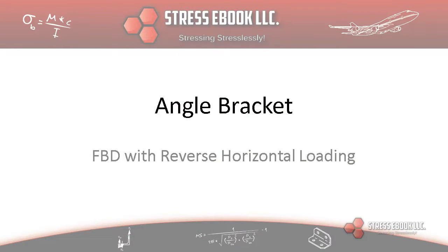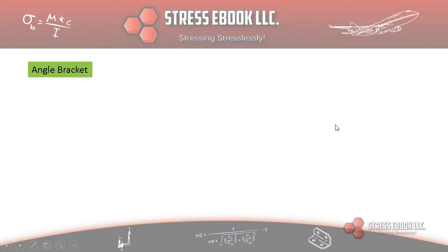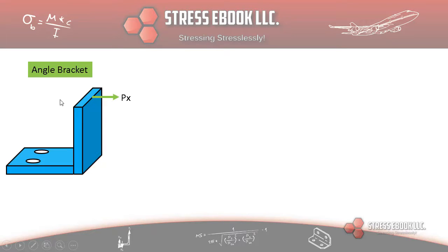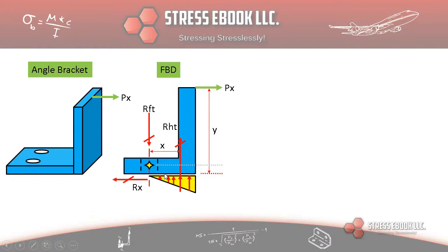Let's get right into this new problem. First thing we're going to look at is our angle bracket and its initial position. You can see here this is the bracket, and in the previous video this load was going to the left. Now this load is going to the right, the reverse direction. So what is the free body diagram FBD going to look like? This is going to be our free body diagram.